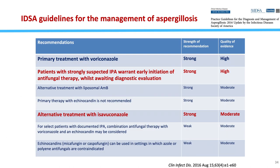The IDSA guidelines for management of aspergillosis state that primary treatment is voriconazole and an alternative treatment is isavuconazole. Importantly, in patients with strong suspicion of IPA, we should start antifungal treatment as soon as possible — not wait until results are positive. It is life-saving, just as with my patient, where we started antifungal therapy one or two days before test results and the patient recovered very rapidly.